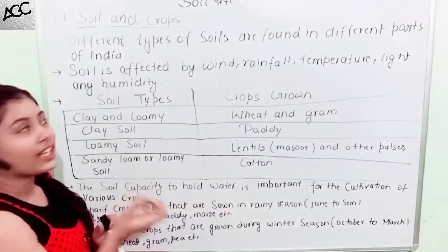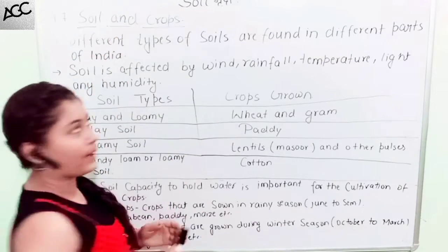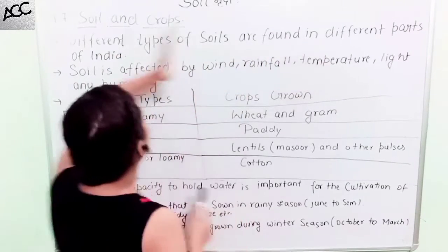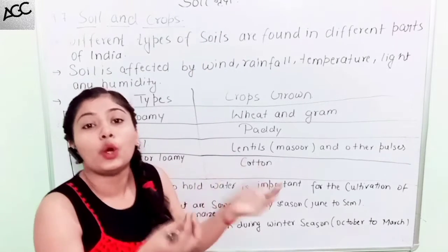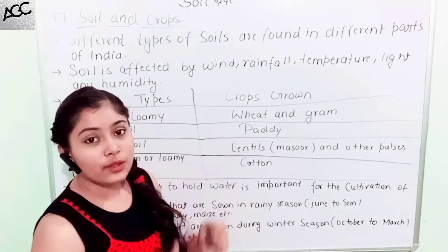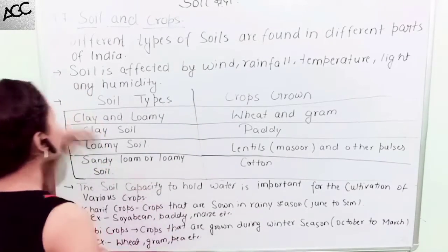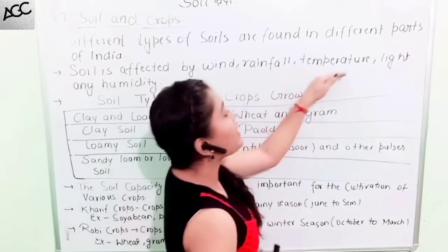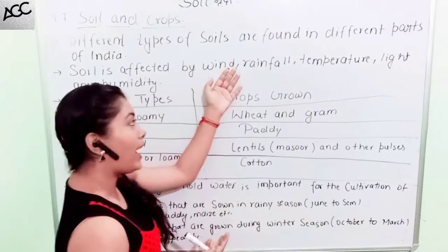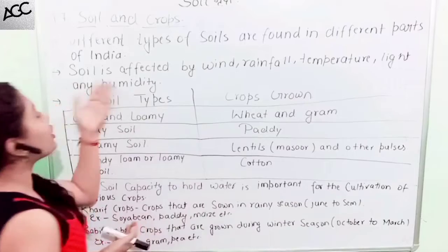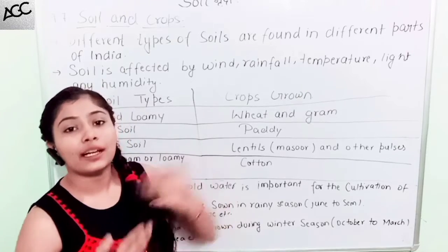Soil and Crops — soil is called 'Mitti' and crops are called 'Fasal'. Soil is affected by wind, rainfall, temperature, light, and humidity. Soil also has a lot of impact on these factors — it changes with changes in these factors.